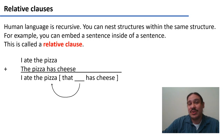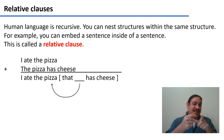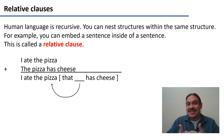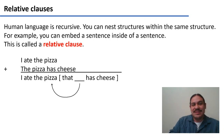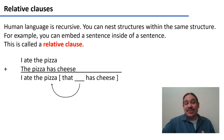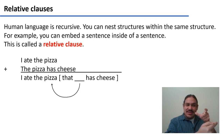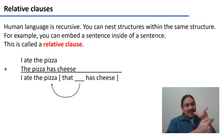Human language is recursive. You can have a structure and then nest the same structure within it. For example, you can have a sentence within a sentence — we call this a relative clause. In English, if you combine the two sentences 'I ate the pizza' and 'The pizza has cheese,' you could say, 'I ate the pizza that has cheese.' You have a main structure, 'I ate the pizza,' and a substructure — the relative clause — 'that has cheese.'